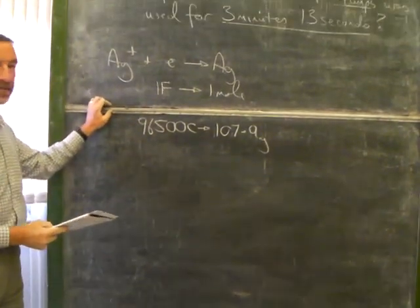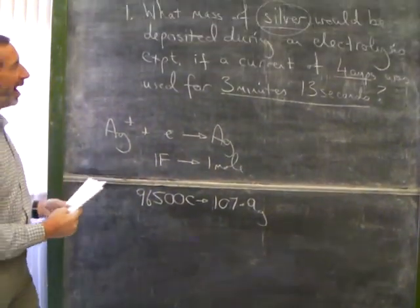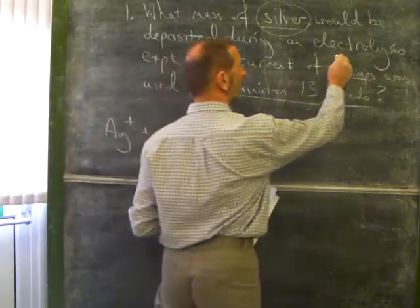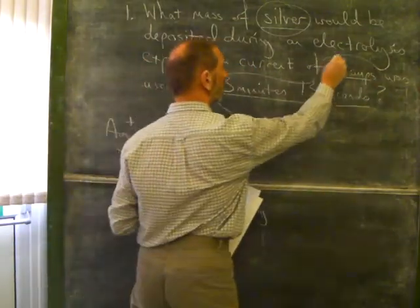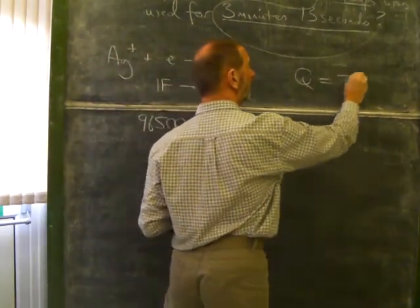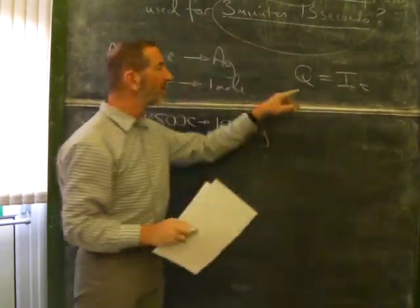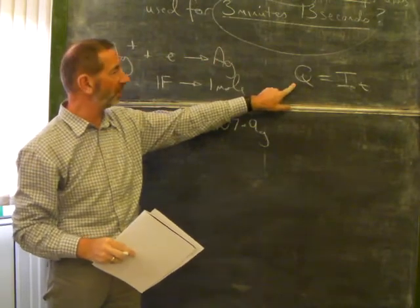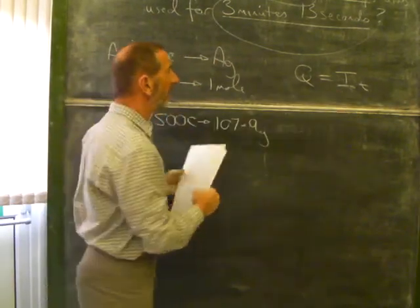Now, let's leave that for a moment and work out how much electricity was involved. How much electricity is that? We have this equation, Q equals IT. So the quantity of electricity can be found if you know the current and the time.